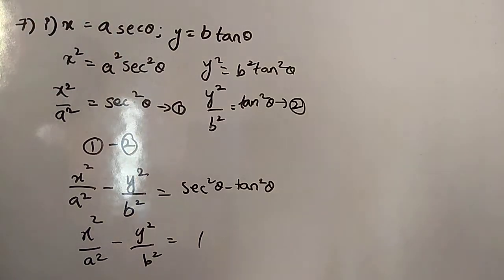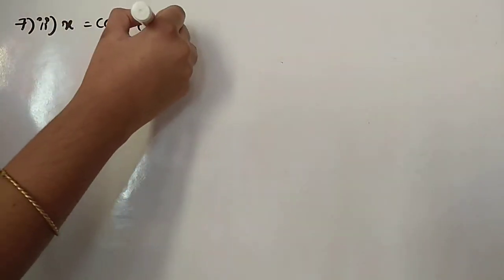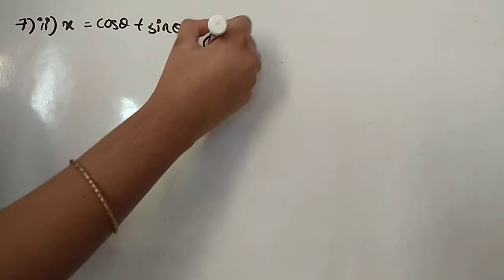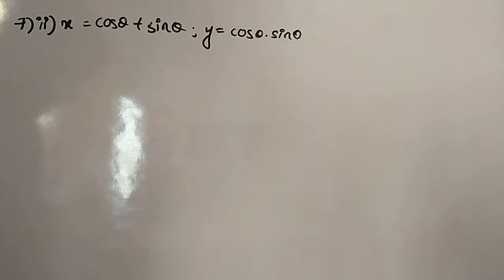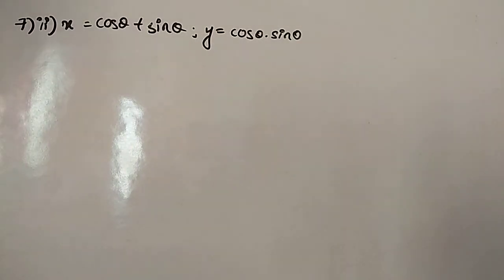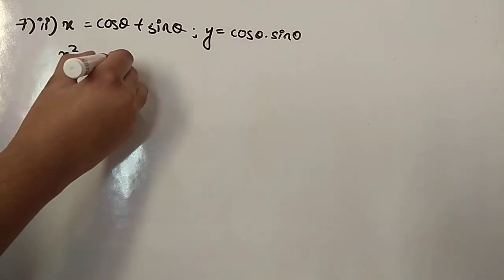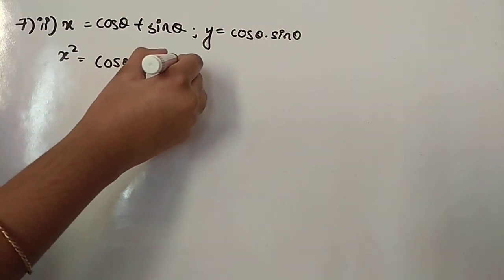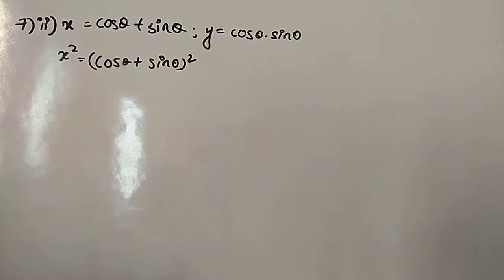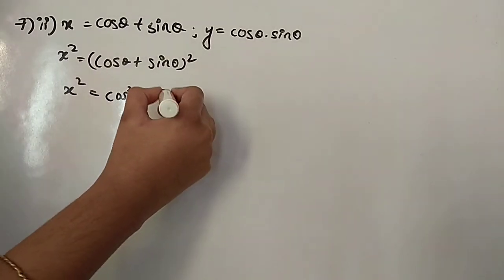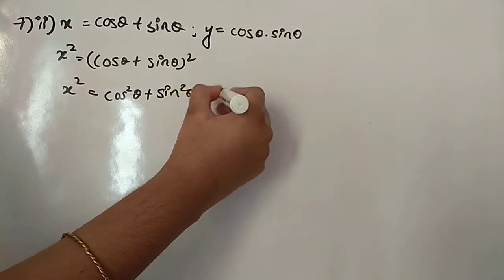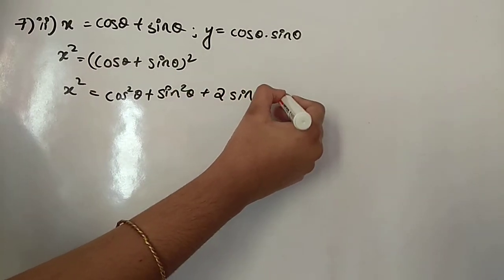Now we will see the second part. x is equal to cos θ + sin θ, and y is equal to cos θ·sin θ. First, squaring: x² = (cos θ + sin θ)². This expands like (a + b)² = cos²θ + sin²θ + 2·sin θ·cos θ.